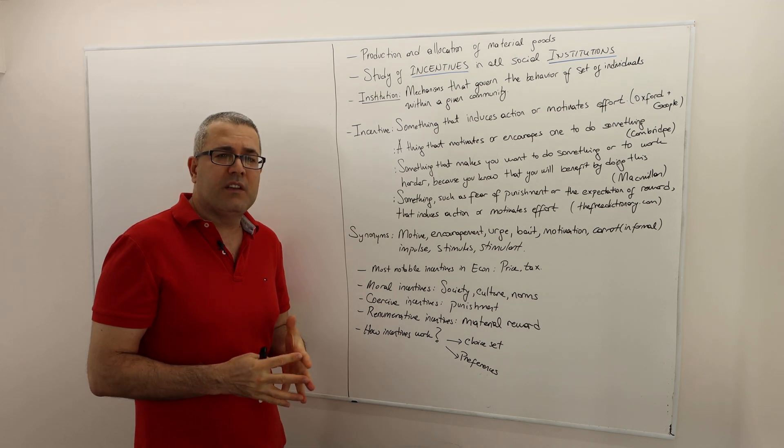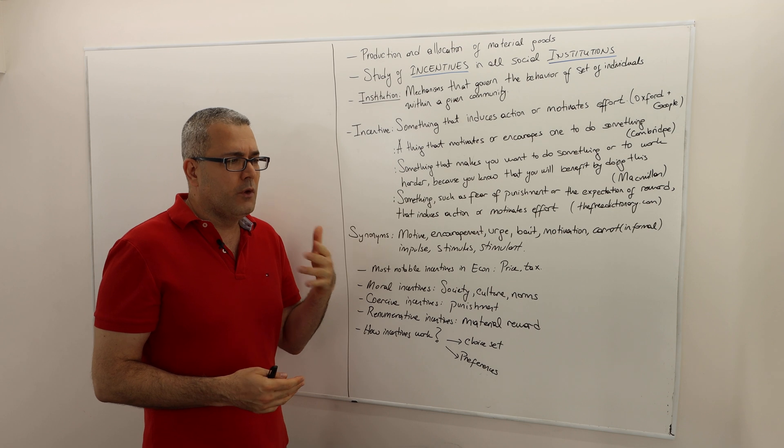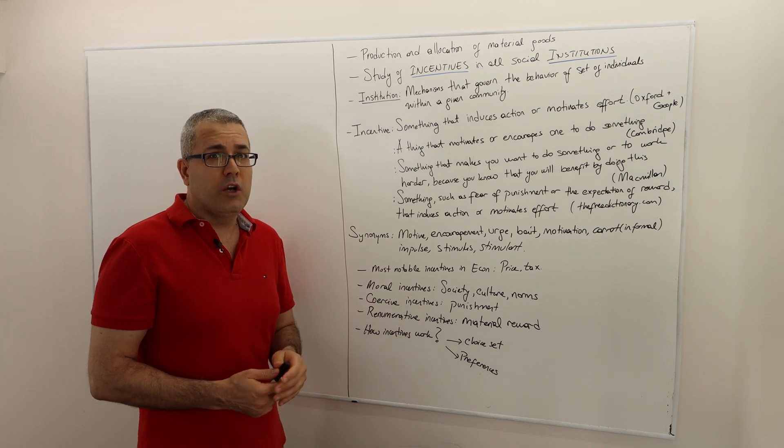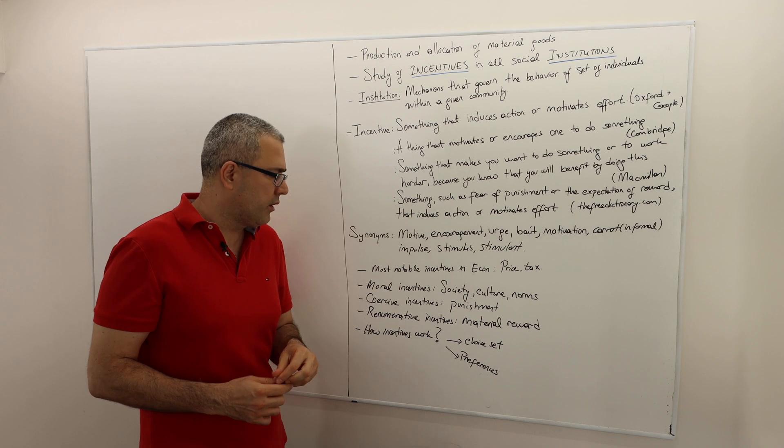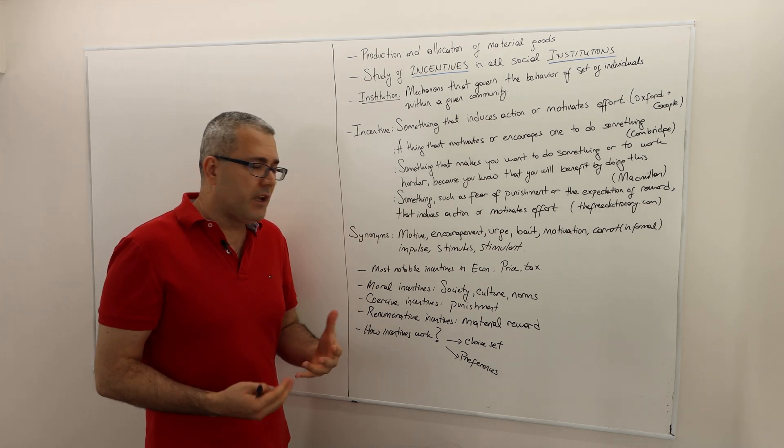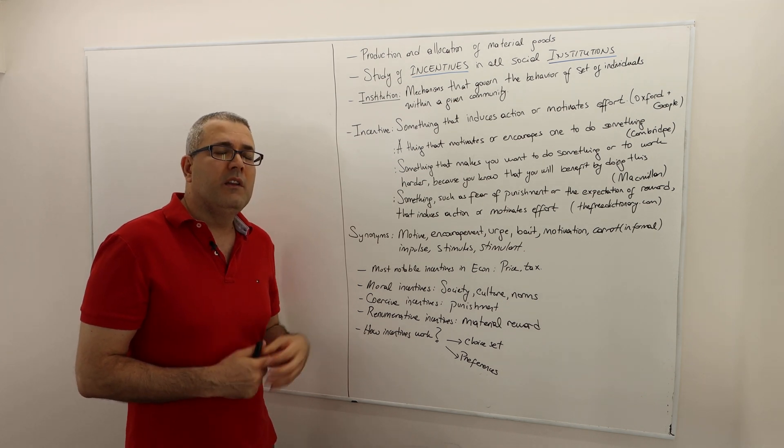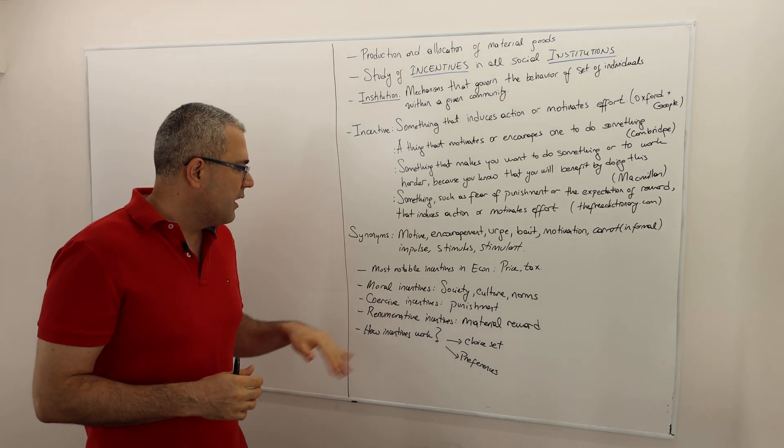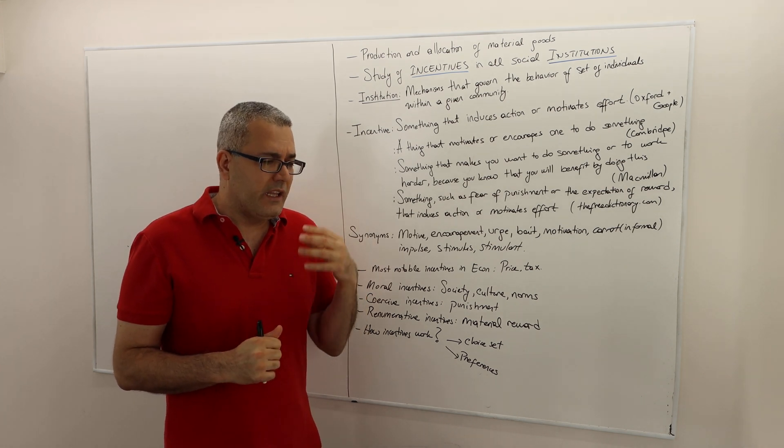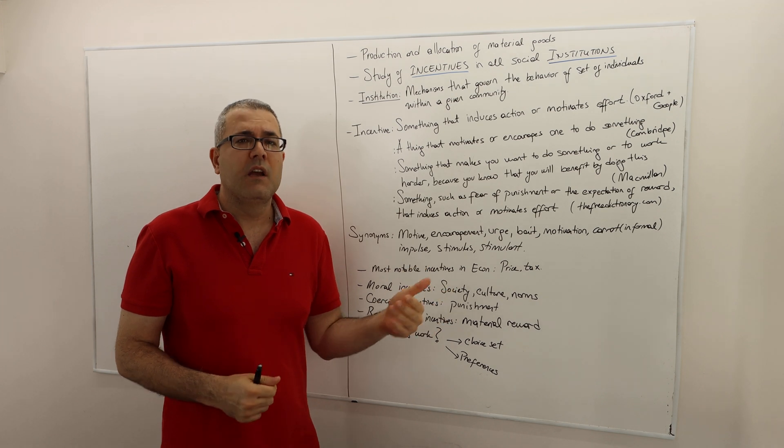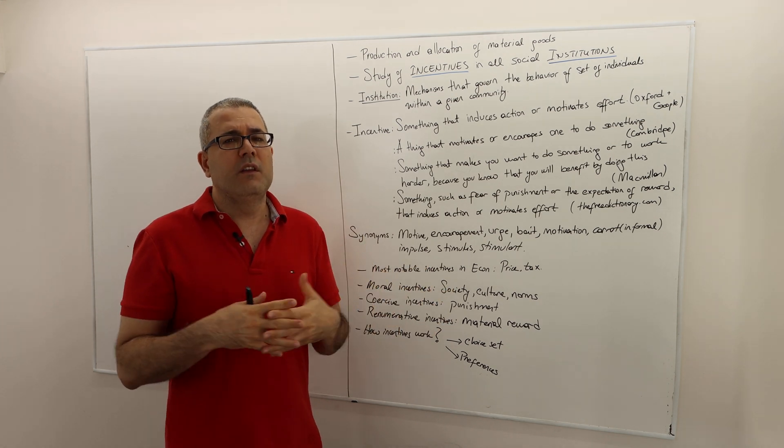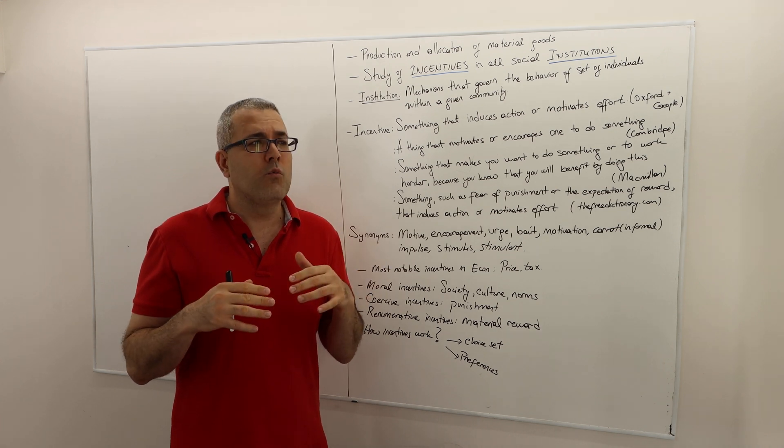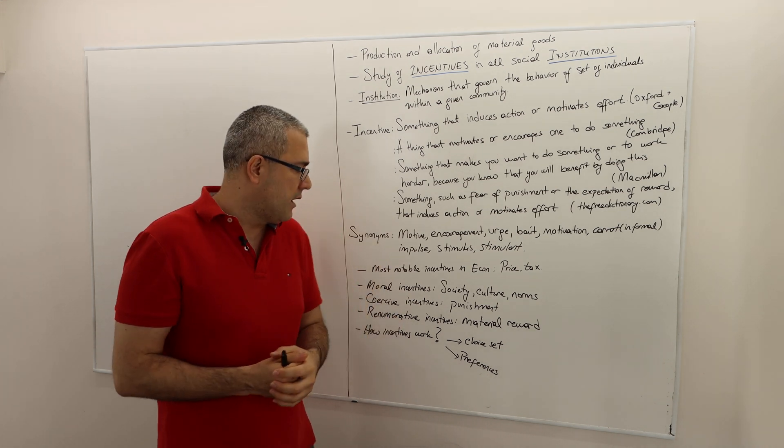One important question is how do incentives work? There are things, you know, pokes or nudges that change behavior. But what is in the core? How does this mechanism work? Well, there are different explanations. One explanation would be that incentives change the choice set of an individual. For instance, moral incentives—if you are taking an action towards your siblings, the moral incentives usually reduce the set of actions that you can take. You may not feel free to choose actions; although you might want to do it, you may not be free to do it.